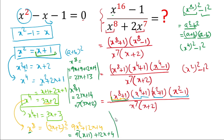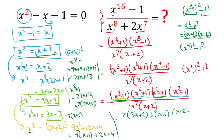Now substituting all values: numerator is 7(3x + 2) times (x⁴ + 1 = 3x + 3 = 3(x + 1)) times (x² + 1 = x + 2) times (x² - 1 = x), divided by x⁷(x + 2). The (x + 2) terms cancel, and the x in the numerator cancels with x⁷ in the denominator, leaving x⁶.